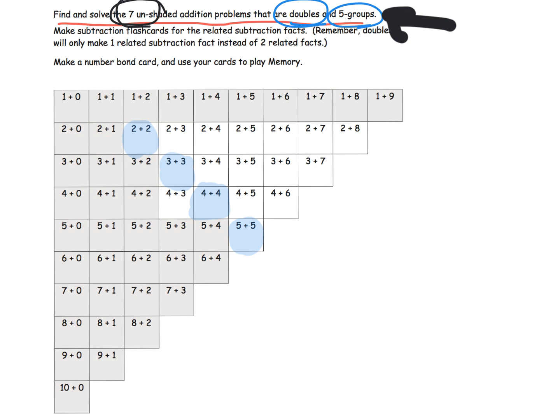Now the thing that wasn't entirely clear to me is what does it mean to be 5 groups? That I didn't understand. It took me a little while to figure out, but what they mean by 5 groups is specifically they wanted us to identify the problems that have a 5 in it, like for example 2 plus 5. So 2 plus 5, 3 plus 5, and 4 plus 5. And there are our 7 problems that we were supposed to identify. That took me forever to figure out.